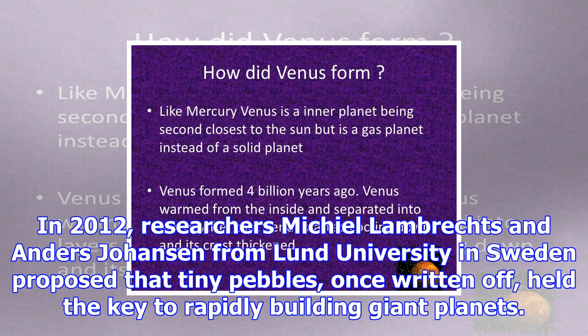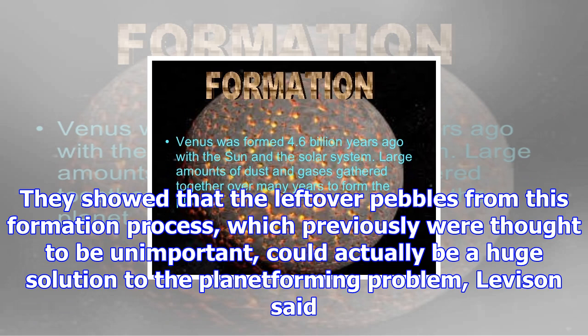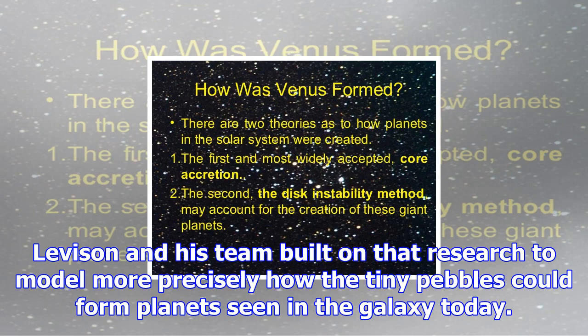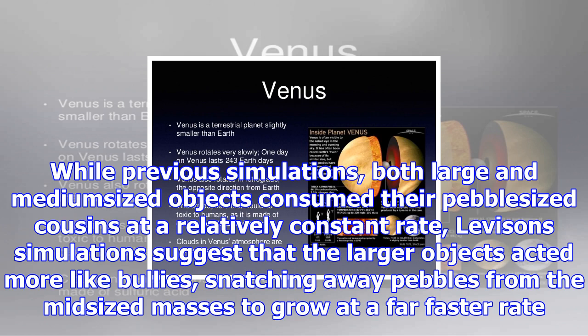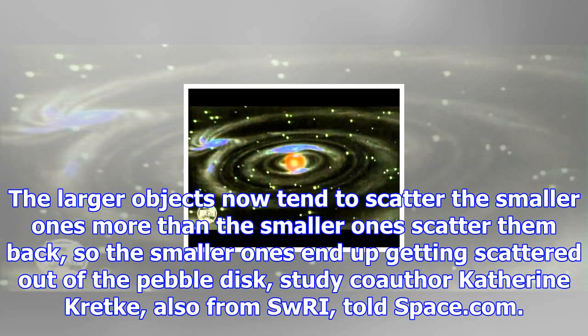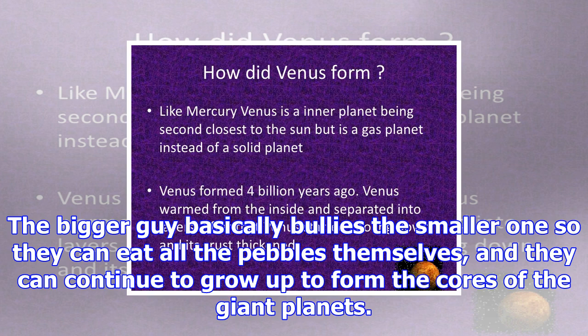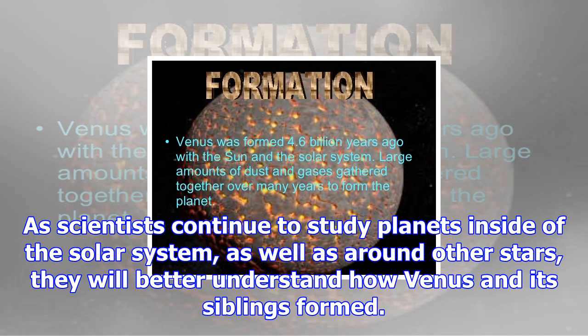Recent research on how smaller, pebble-sized objects fuse together suggests they can build giant planets up to 1,000 times faster than earlier studies. "This is the first model that we know about that you start out with a pretty simple structure for the solar nebula from which planets form and end up with a giant planet system that we see," said study lead author Harold Levison, an astronomer at the Southwest Research Institute in Colorado, in 2015. In 2012, researchers Michiel Lambrechts and Anders Johansen from Lund University in Sweden proposed that tiny pebbles, once written off, held the key to rapidly building giant planets.